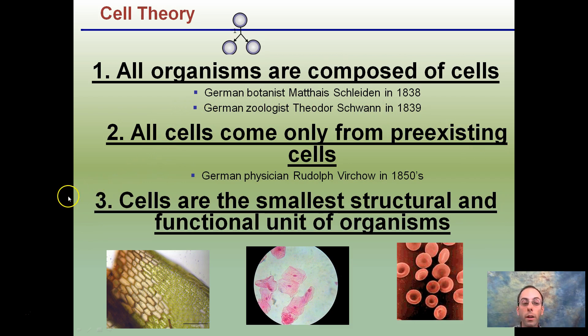The third part of the theory is cells are the smallest structural and functional units of organisms. They're the most simple. They're the most basic structure. Now we can have very different amounts of cells or types of cells. But they're the smallest structural functional unit of an organism.